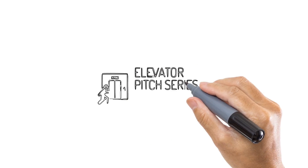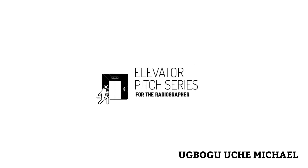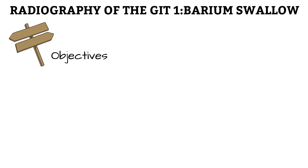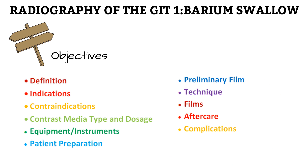Hello and welcome to Elevator Pitch Series for the Radiographer. I am Michael, and this is the third video in the series on special radiographic procedures. Over the next three videos, we'll be looking at the radiographic examinations of the gastrointestinal tract. In this video, we start out by learning about the barium swallow, and as with previous special examinations, we look at it under 11 important subheadings.